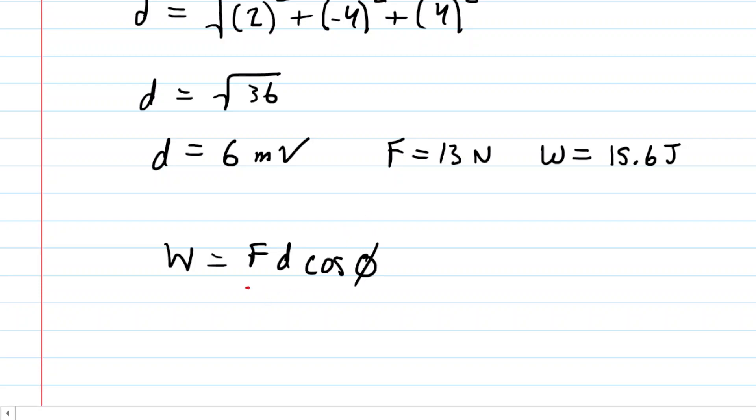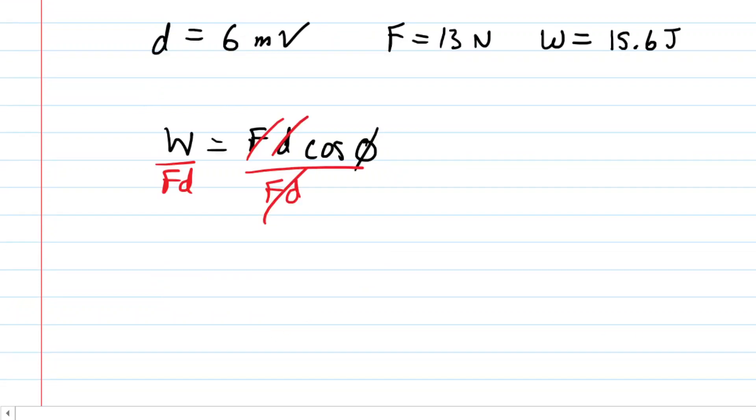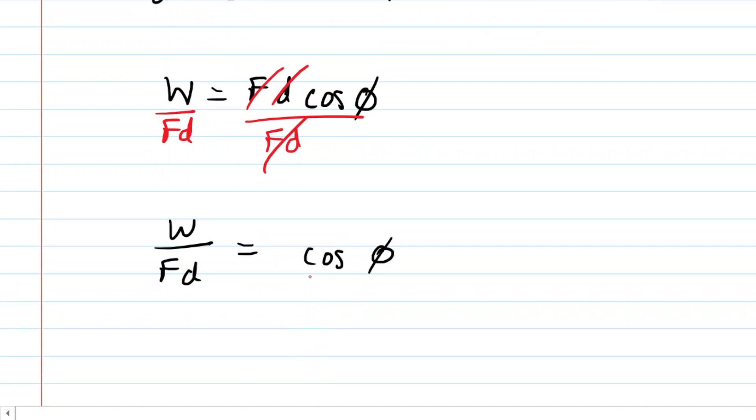We could solve this for the angle. We could divide both sides by the term FD, so we cancel it out on the right-hand side. And then to isolate the angle, recall that you'd have to take the inverse cosine on both sides of the equation. This cancels the cosine out. Now we have the expression for our angle, and we can simply plug in the values that we listed above.